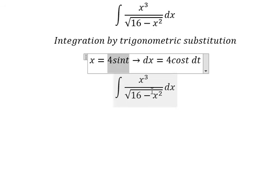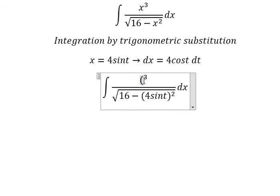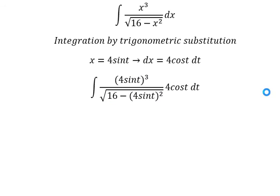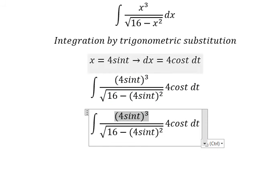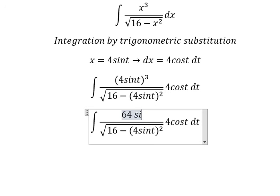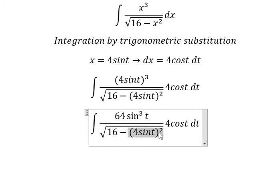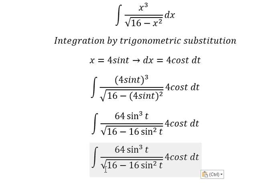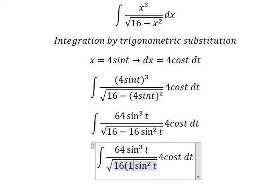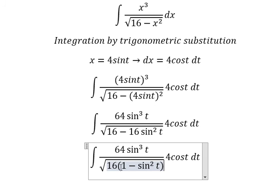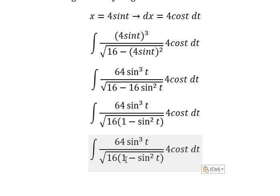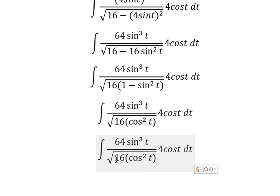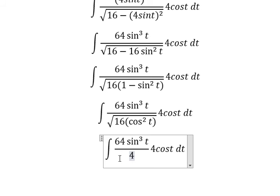So this one I will put in here, and x we change by this one. So we have 64 sine cubed t times 4 cosine t dt. In the denominator we have square root of 16 minus 16 sine squared t. We can factor out 16 times 1 minus sine squared t, which we change to cosine squared t. The square root of 16 cosine squared t gives us 4 cosine t.